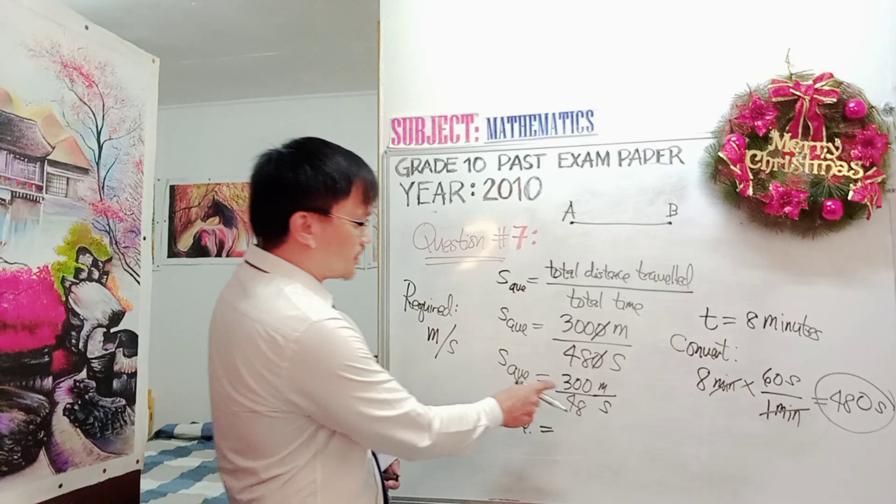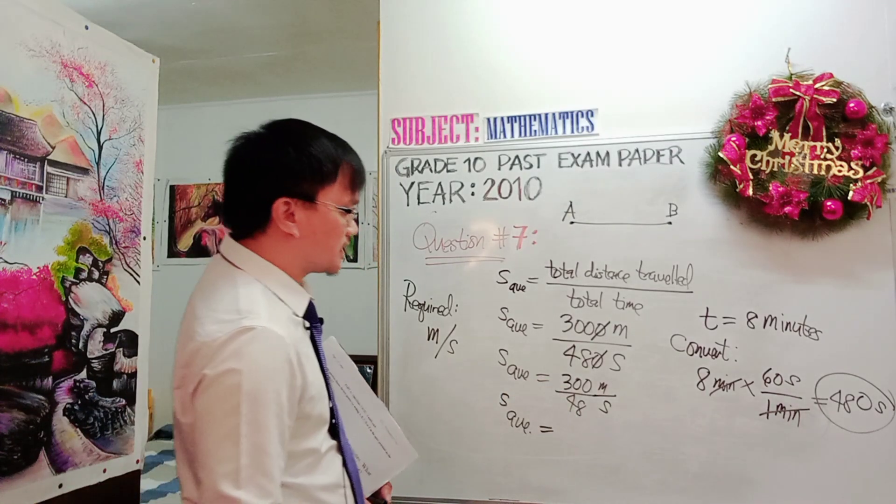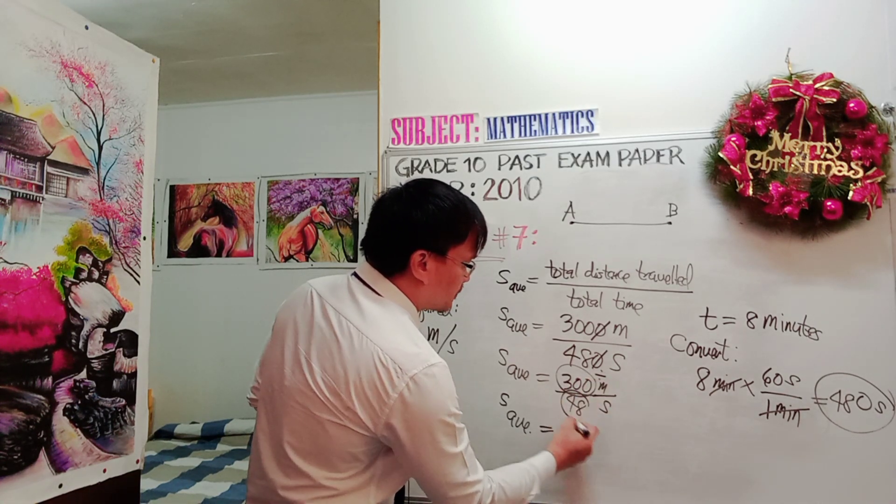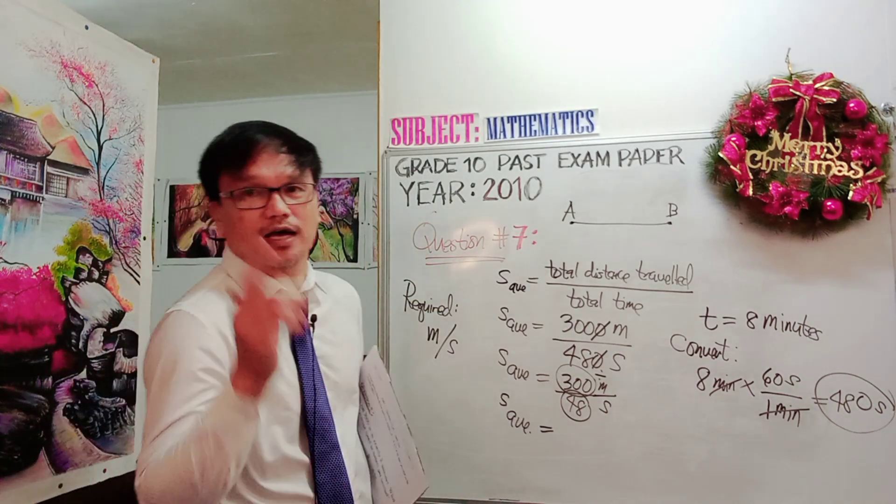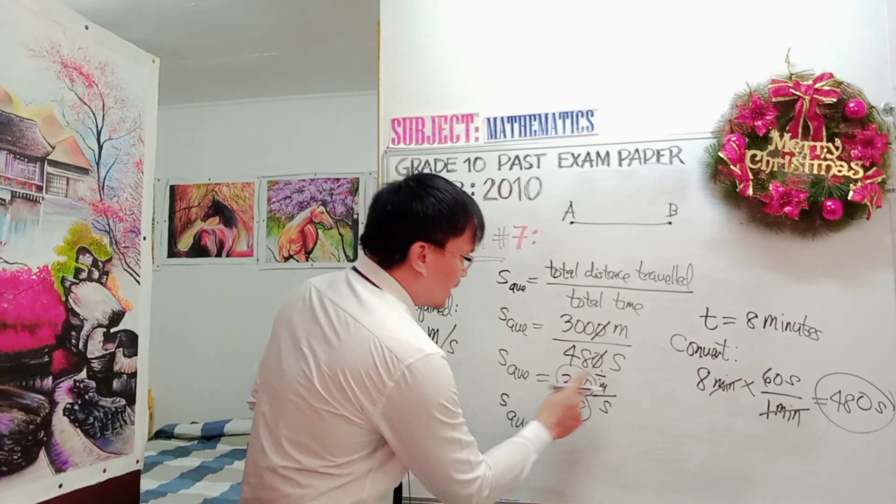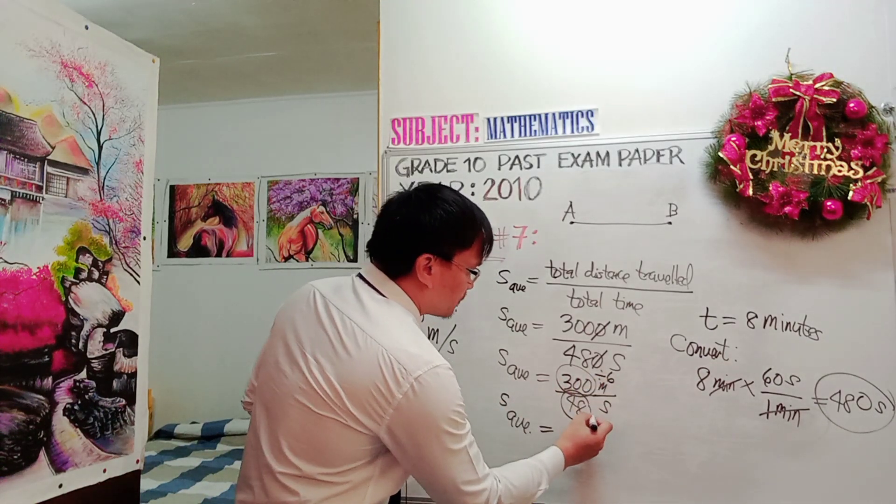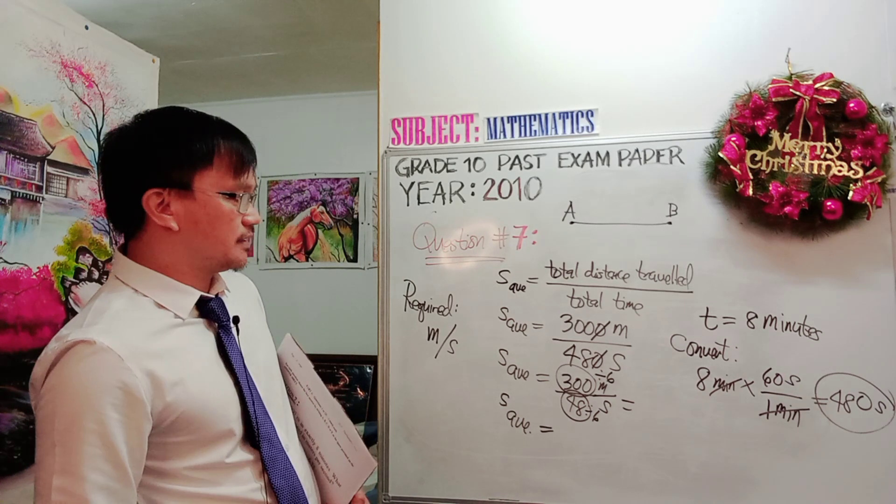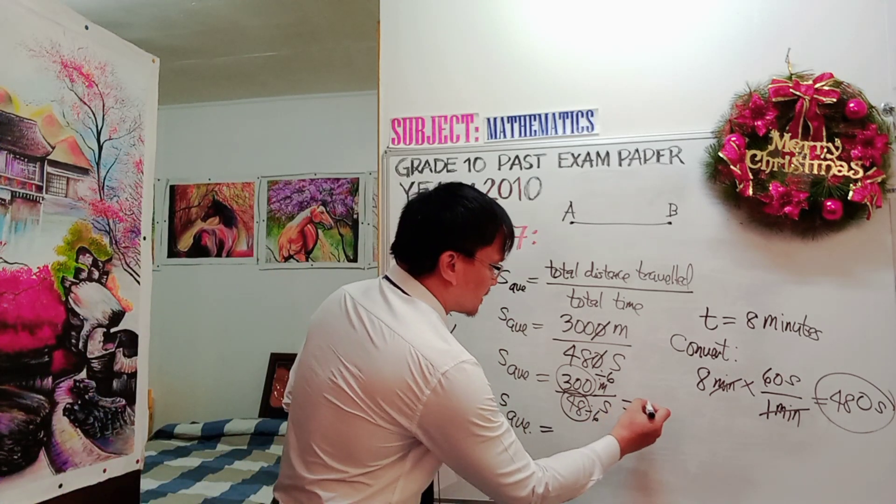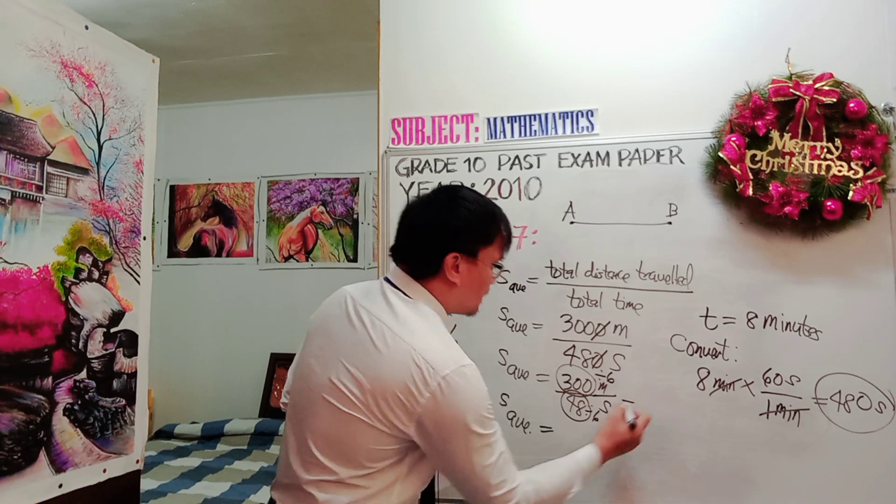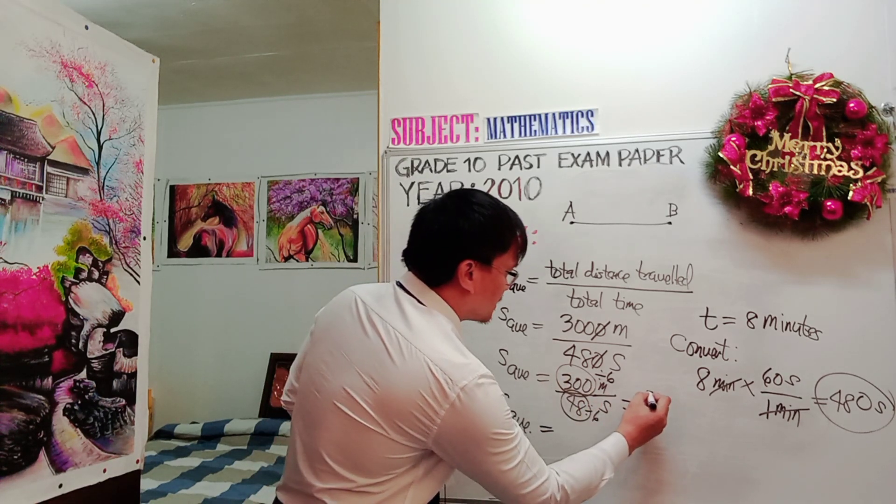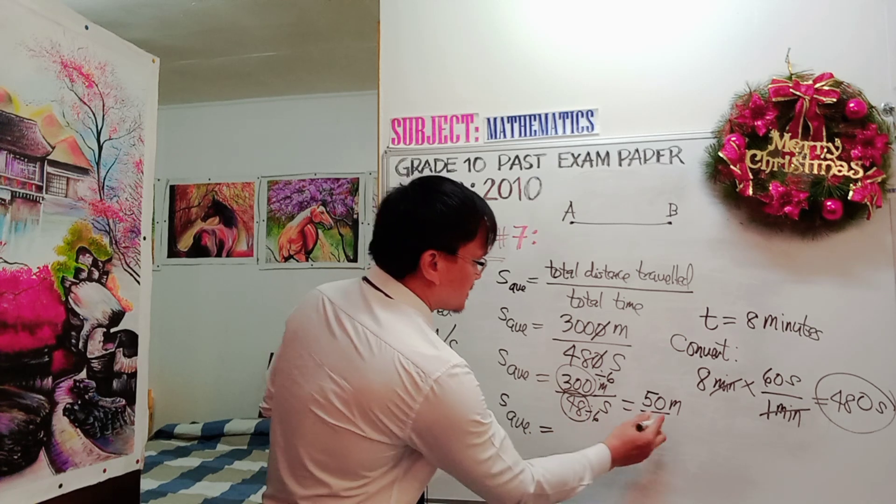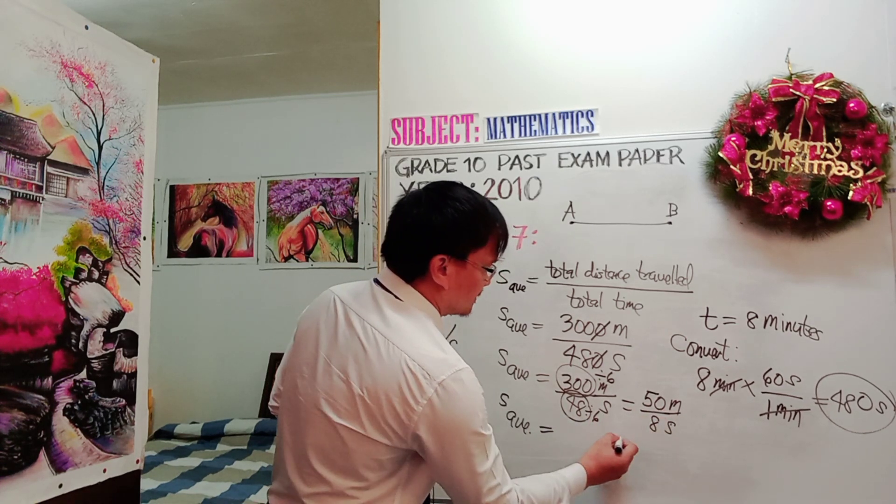We can still find a common or the highest common factor that we can use to divide both 300 and 48 to have a simplified answer. The average speed now is 300 divided by 48. If you are going to simplify this further to make it smaller, we can use 6. 300 divided by 6 is 50 meter, and 48 divided by 6 is now 8 seconds.